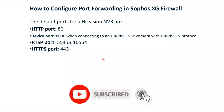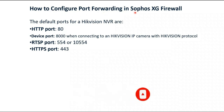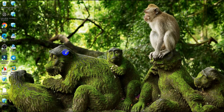In this video, I will configure port forwarding in Sophos XG firewalls for Hikvision NVR or DVR. We will use ports 8080, 8000, RTSP port 554, and HTTPS port 443. Let's start with how to enable and configure this on the Sophos XG firewall.